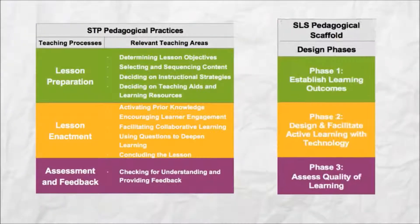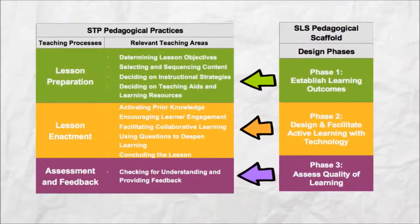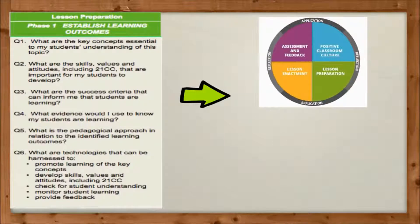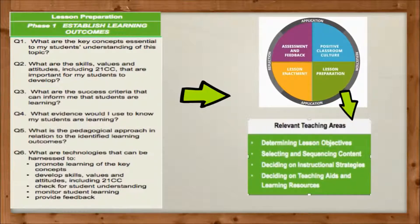See how each design phase of the SLS pedagogical scaffold is aligned to the teaching processes in the STP. Phase 1 of the SLS pedagogical scaffold guides teachers to establish the learning outcomes. It sits with the STP teaching process of lesson preparation, where the intended learning outcomes are established right from the start.